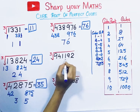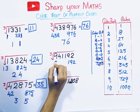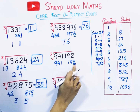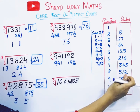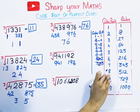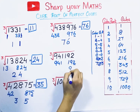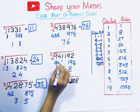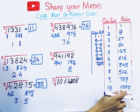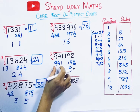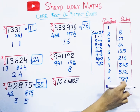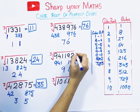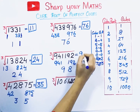Next number: check the unit digit — it ends with 2. If the cube ends with 2, its cube root ends with 8. So write 8. Now take the left group, 941. It is close to 1000, but we should take the number which is less than it — that is 729. Its cube root is 9. So the answer is 98.